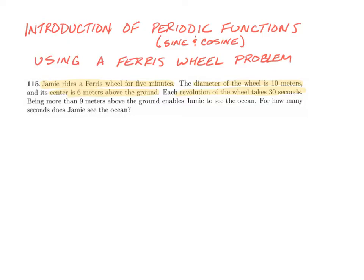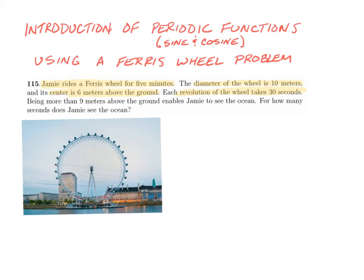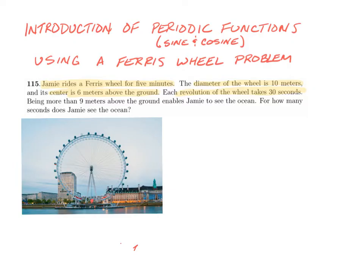Let's put a picture of a ferris wheel here — I know this isn't the same ferris wheel and probably doesn't resemble it in terms of its scale, but here's our ferris wheel. Jamie is going to enter the ferris wheel at the bottom. The diameter of this wheel is 10 meters, so all the way across is 10 meters, which means the radius is 5 meters. The center is 6 meters above the ground, so from the center to the ground is 6 meters.